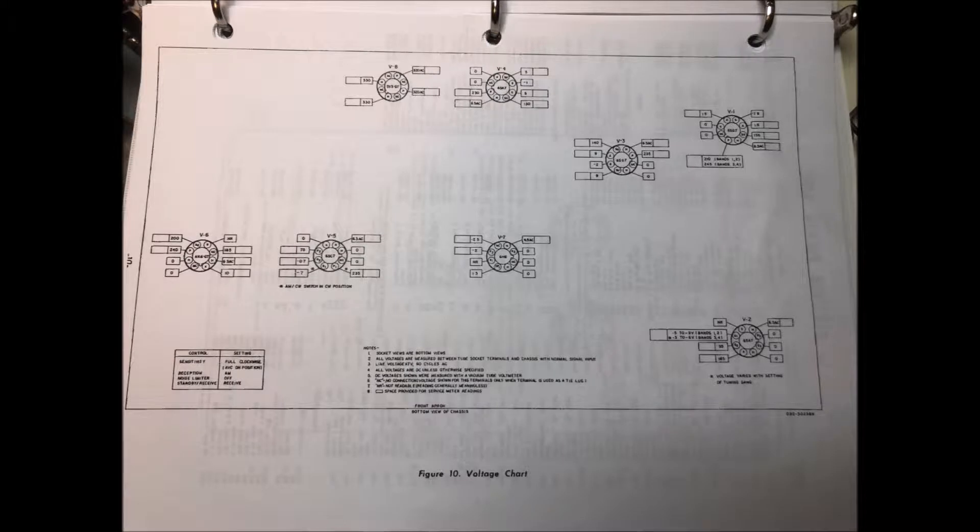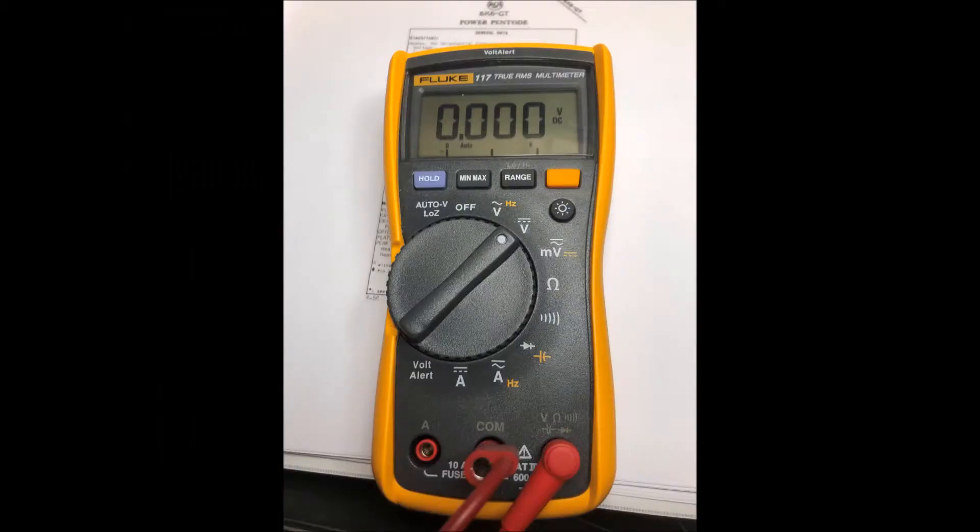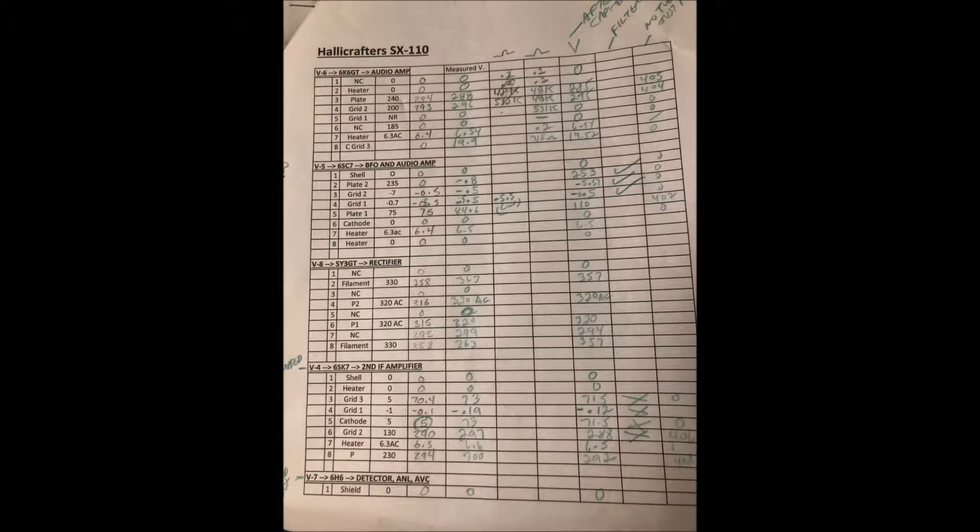The next thing to do was get the voltage chart and start measuring voltages on all the tubes. I used this as a good excuse to go and buy a new Fluke meter because all the junky ones I had kept giving different results. I took all the information from the voltage charts and started measuring things and recording it, trying to figure out what was good and what was bad.